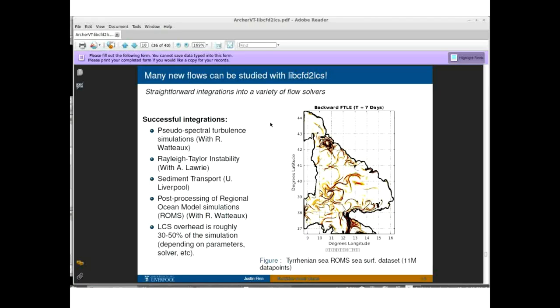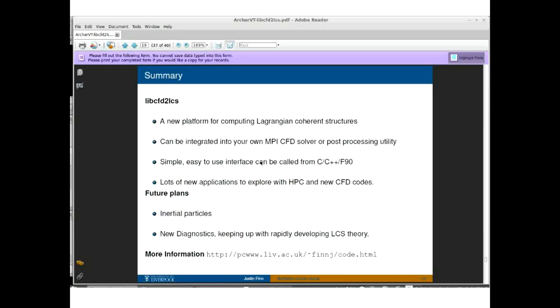In terms of performance, what I've seen is that the overhead of computing the LCS relative to your simulation is really going to depend on how expensive your simulation is to run. But if we want to compute one or two FTLE fields with roughly the same level of detail as the hydrodynamic simulation, we're looking at approximately perhaps 30 to 50 percent of the simulation time. This, again, really depends on parameters and the specifics of the solver you're using. But all in all, I think this is a relatively affordable way to get LCS type results and to be able to use this type of technique to analyze new data.